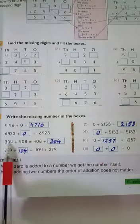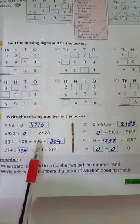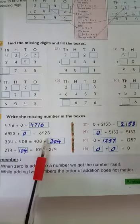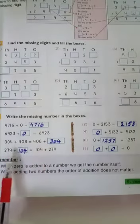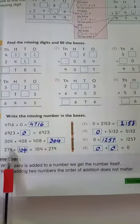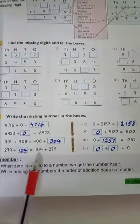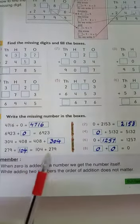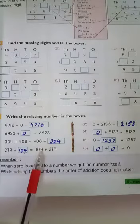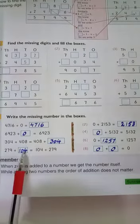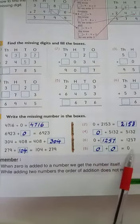Ab dekhein: 304 plus 408 equal to — 408 yahi value dobaara se aa gayi, aur 304 box mein aa jaayegi to dono values equal ho jaayengi. Isi tarah se yahan se kya missing hai? 279 equal ke ek taraf 279 aur 104 — dono values di gayi hain. Lekin equality ke doosre taraf dekhein to hum 0 add karenge to answer hamara kya hona chahiye? 0.